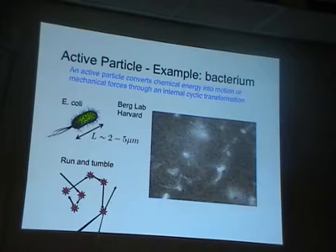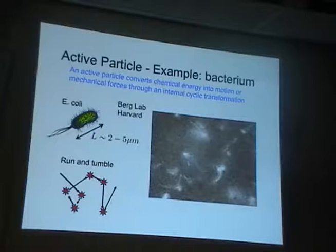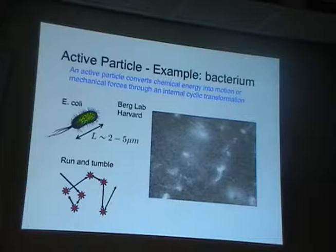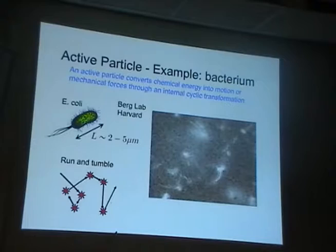This run-and-tumble dynamics of E. coli is quite different from Brownian motion, which is what a colloidal particle in a fluid at thermal equilibrium does. Although the difference may seem subtle, we will see that the collective behavior of these systems is actually very dramatic at large scales.